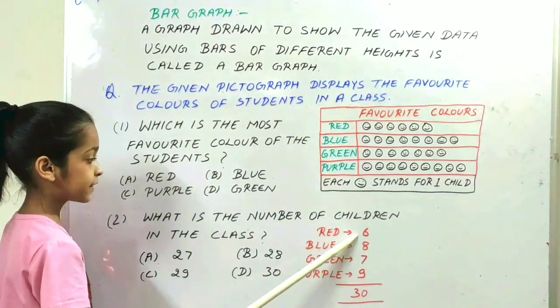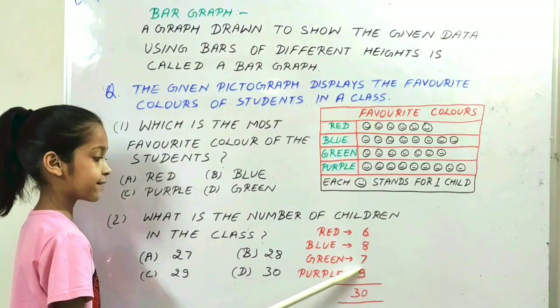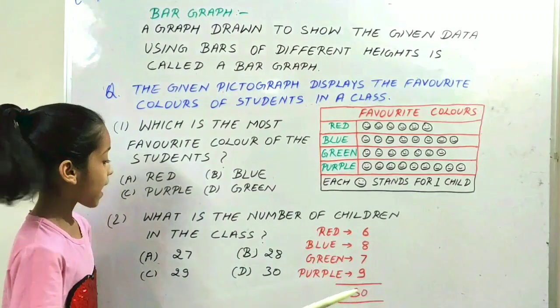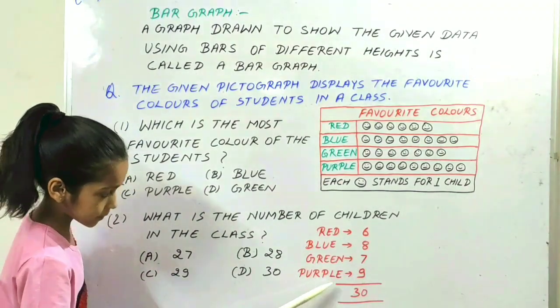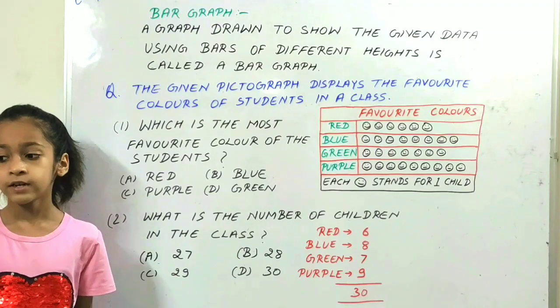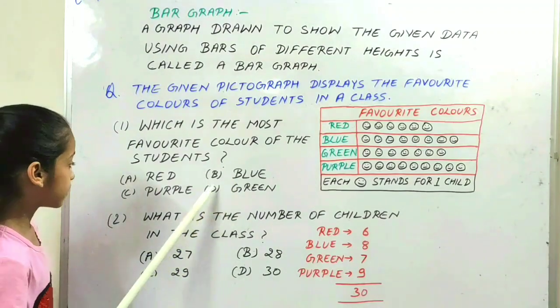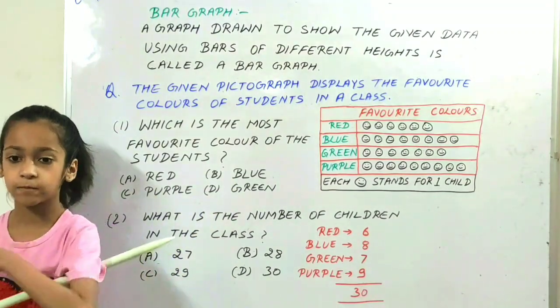Here 6 students like red color. 8 students like blue color. 7 students like green color. And 9 students like purple color. So 9 children like purple color. Option C is the right option.